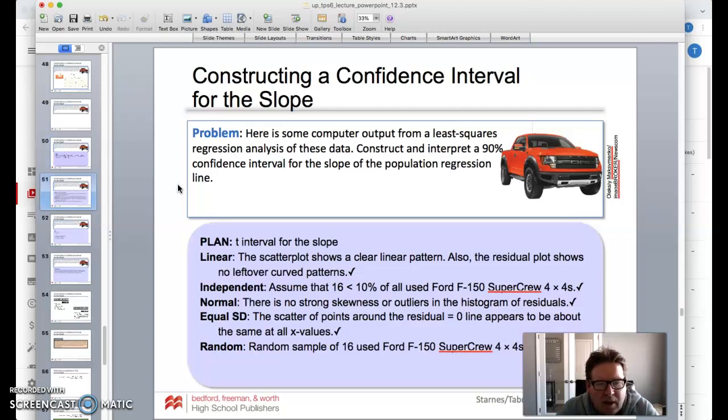We're going to do our plan with a T interval for slope. The scatter plot shows a clear linear pattern. Also, the residual plot shows no leftover curve patterns. Check. Independent? Yes, we assume that the 16 is way less than 10% of all used F-150s.